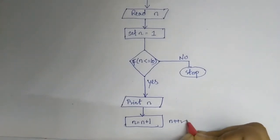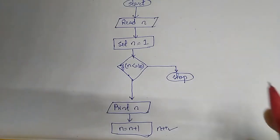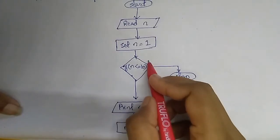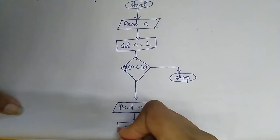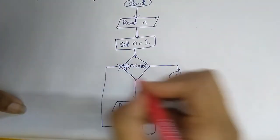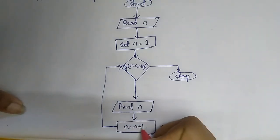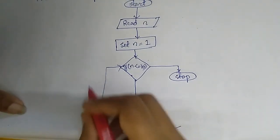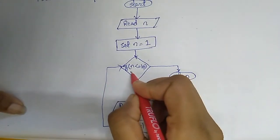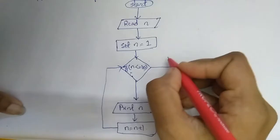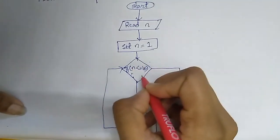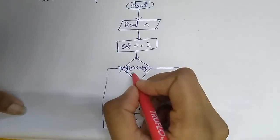Now this process of incrementation and checking the condition will repeat until the condition is false. So this process to increment and again checking, so we are directing here to condition checking, will only stop if the value of n will not meet the condition.